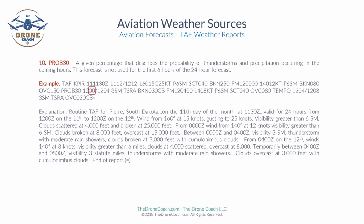Now this is where it gets a little tricky — we have a probability group between zero hundred Zulu and 0400 Zulu. There's a 30% probability the visibility will be three statute miles, thunderstorms and rain, broken at 3,000 feet with cumulonimbus clouds.